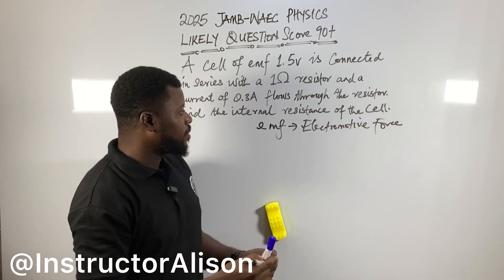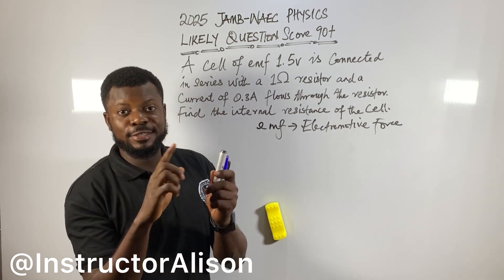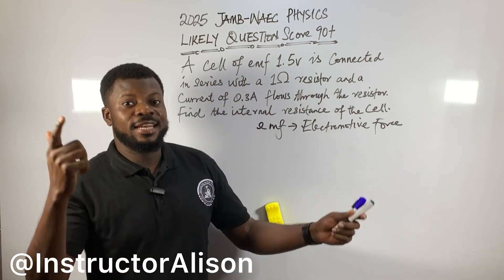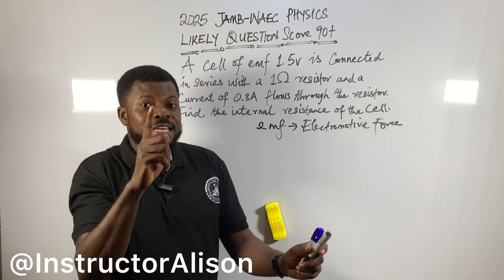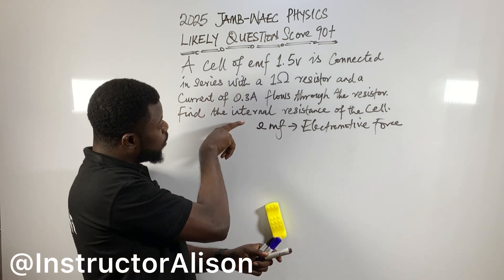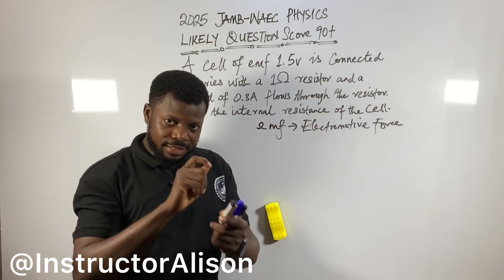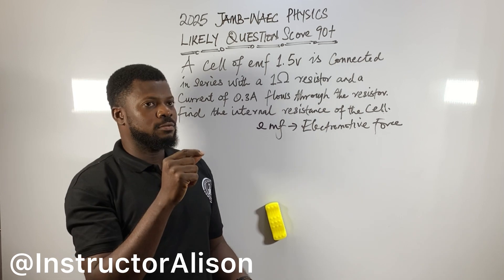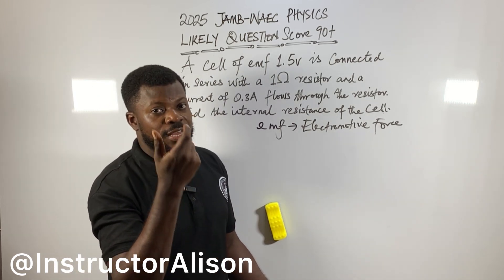Now I'm going to define this EMF. EMF is the potential across the terminals of a cell when the cell has not been connected to the external circuit. Now for every EMF, for every electromotive force, there is always what they call internal resistance. This is the way you find it of the cell. For every EMF, there is always an internal resistance.